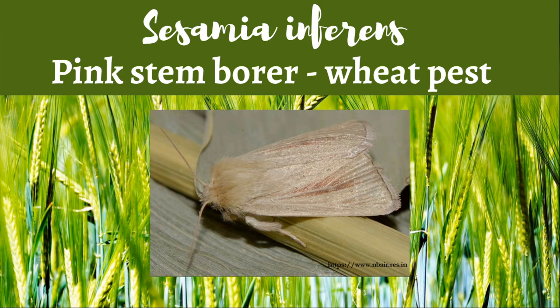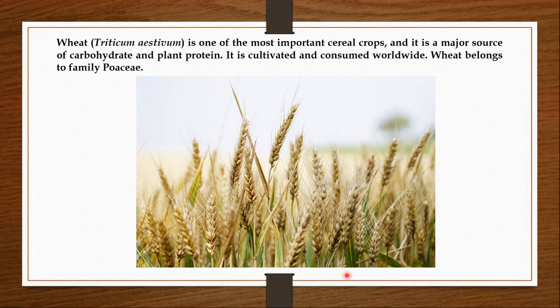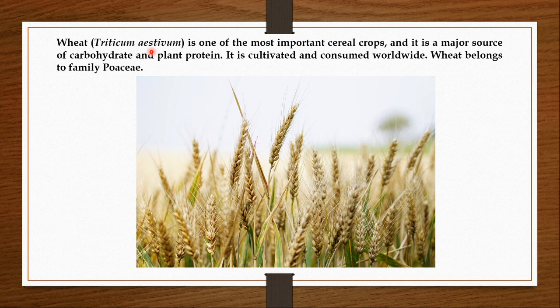It is a serious pest of wheat in India. Wheat is one of the most important cereal crops and it is a major source of carbohydrate and plant protein. It may not supply all the essential amino acids but it still remains a good source of protein. Wheat is cultivated and consumed worldwide and Triticum aestivum is the most common species cultivated, though other Triticum species are also grown. Wheat belongs to family Poaceae, which also includes grass, rice, maize, millet, sugarcane, etc.